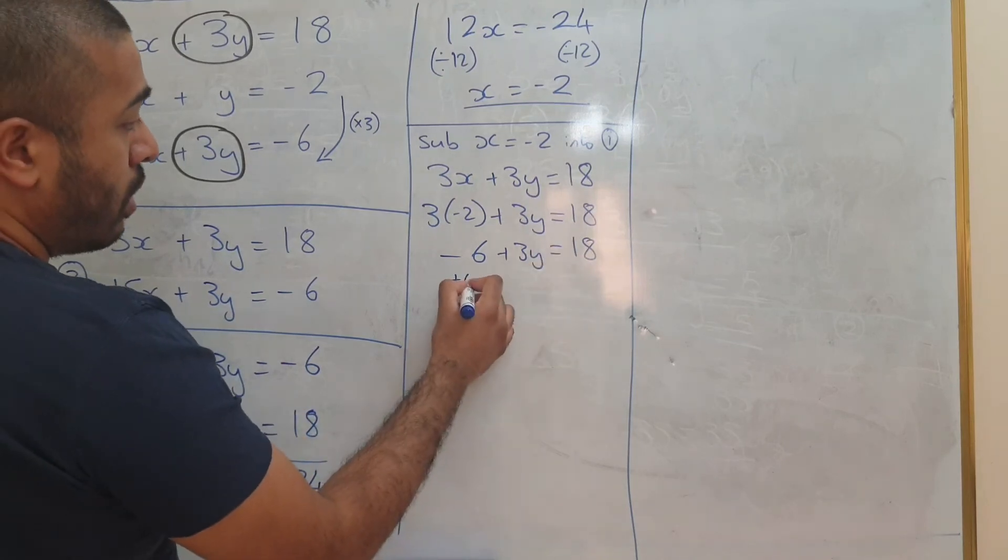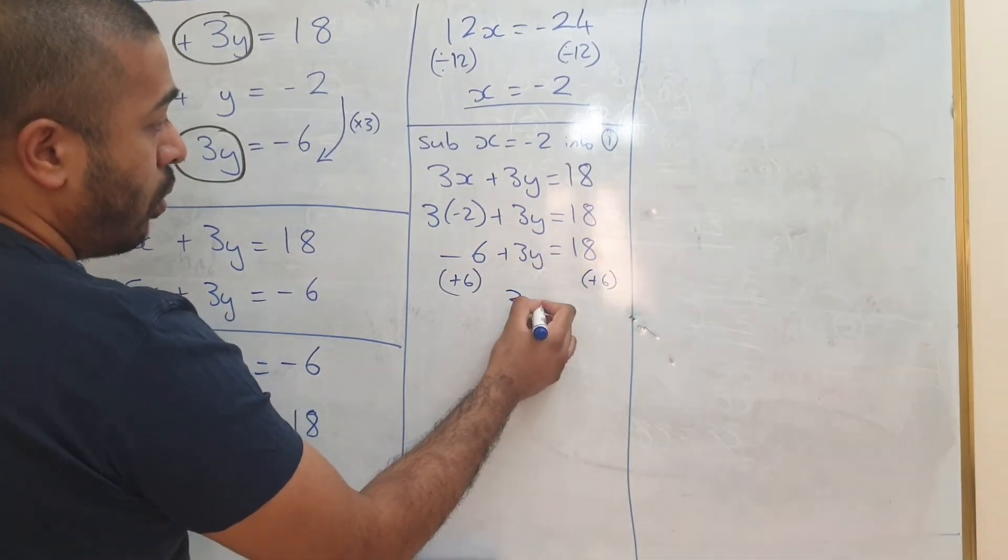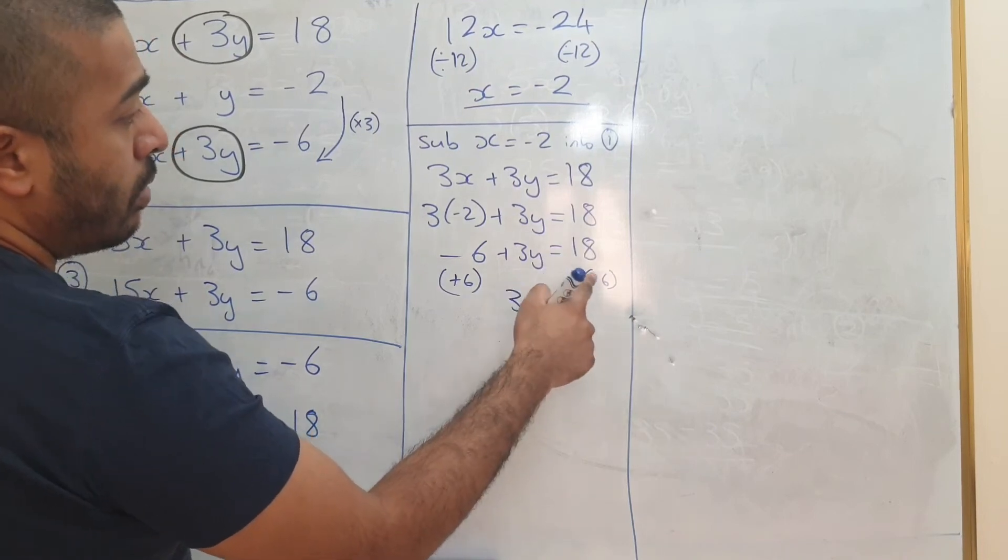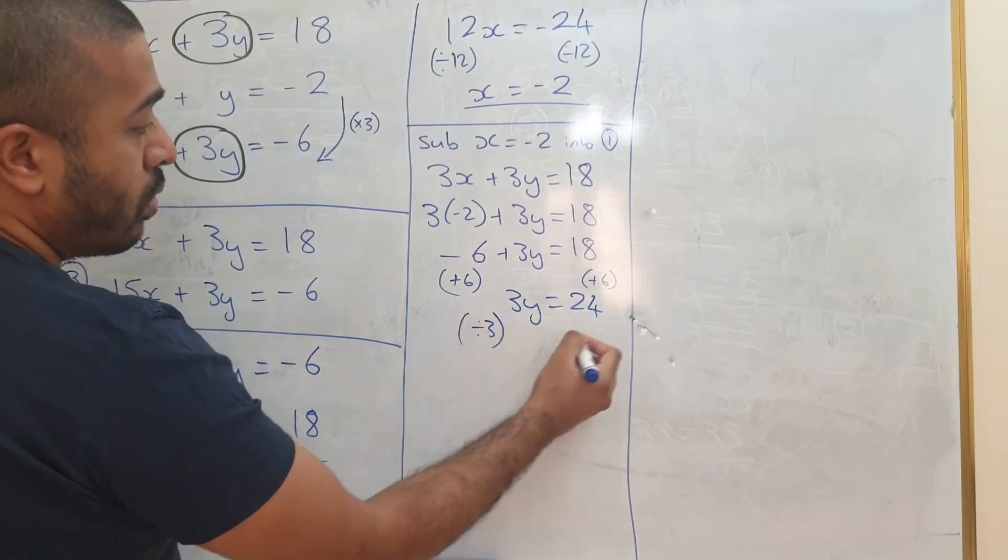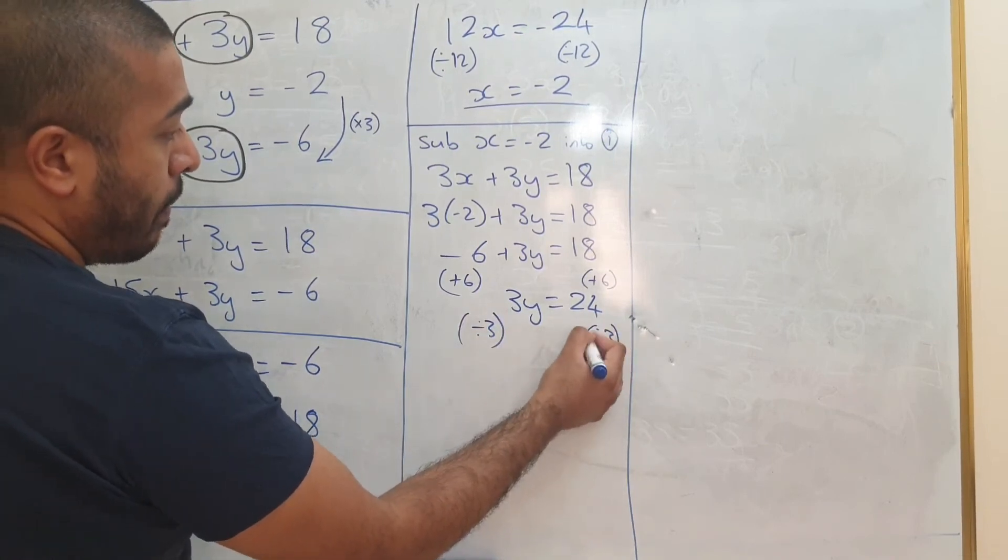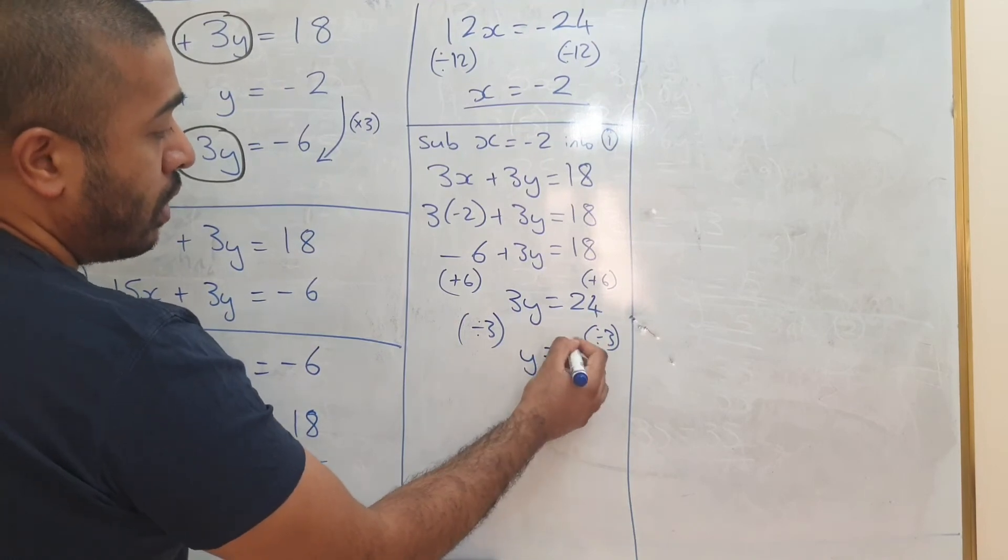You get 3y equals 18 plus 6 which is 24. And to get y on its own, divide by 3. So you get y equals 24 divided by 3 which is 8.